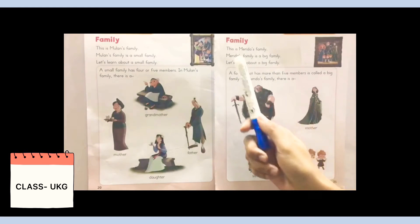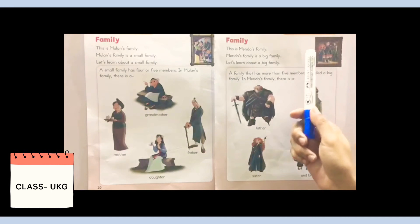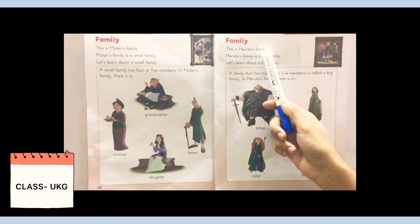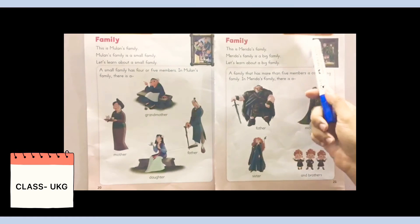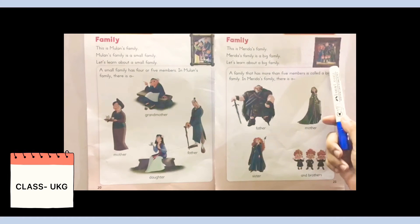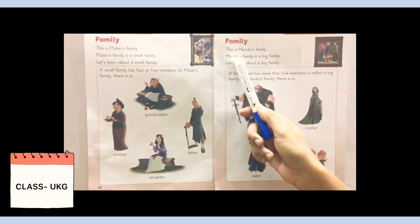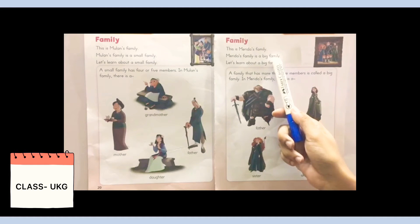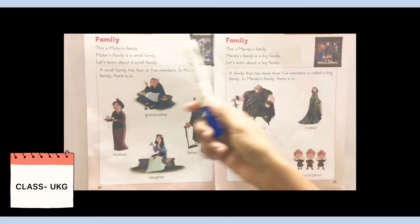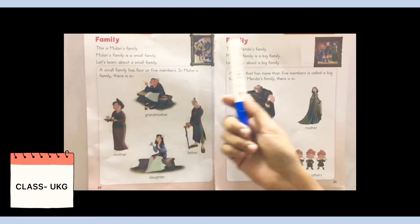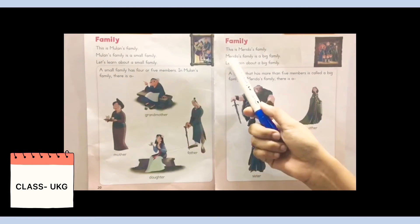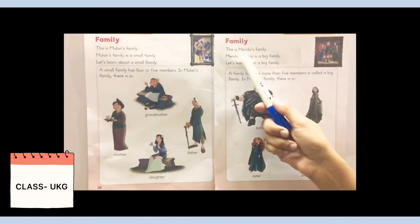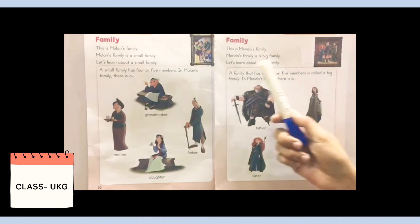And अब यह दूसरी family के बारे में पढ़ते हैं. This is Merida's family. Merida's family is a big family. Mulan की small family थी, छोटी family थी, लेकिन Merida big family में रहती है, बड़ी family में रहती है.